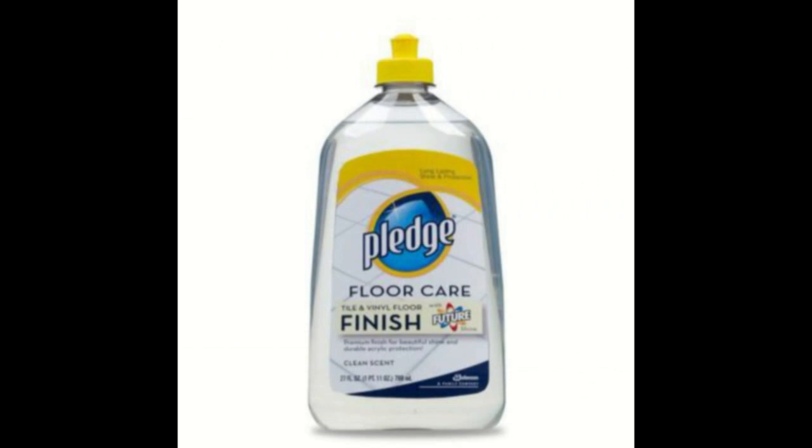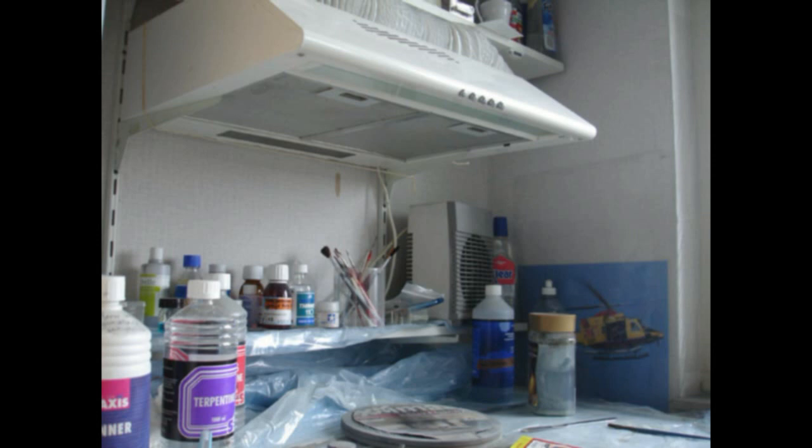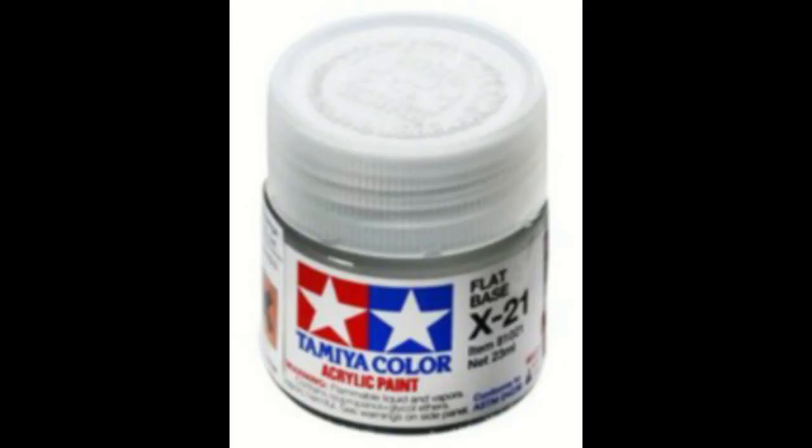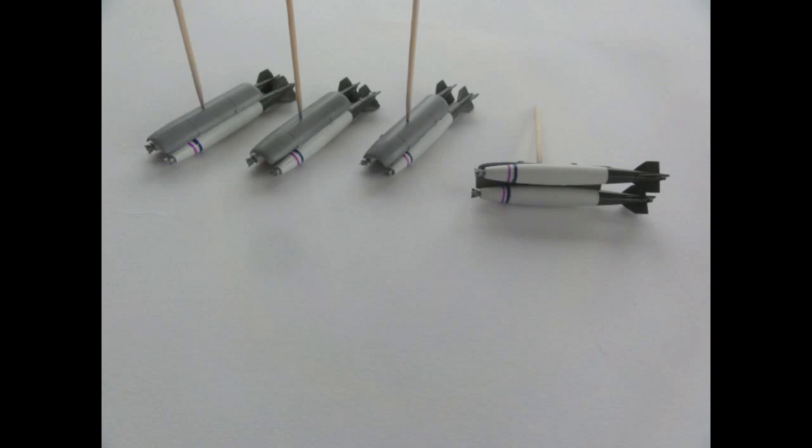I always airbrush a final varnish coat on a model, in this case a semi-gloss coat. This to give the model an even sheen and protects the decals. I airbrushed a mix of my favorite Johnson Future acrylic floor varnish thinned with isopropyl alcohol and some drops of Tamiya acrylic x21 flat base. This will dull the varnish a bit giving a semi-gloss sheen. The stores were not forgotten and also got a coat and all was set aside to dry.